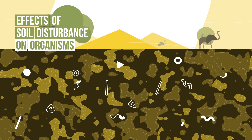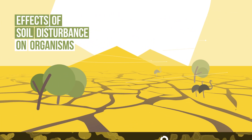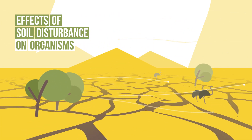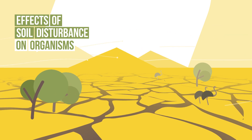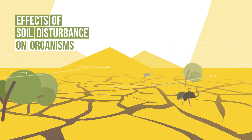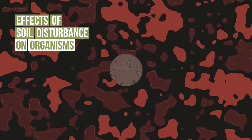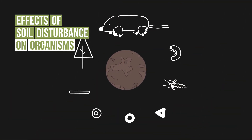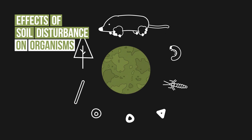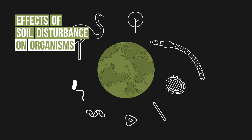Soil organisms are diverse and are found in all environments, even those with extreme physical and chemical conditions. The responses to disturbances depend on how the environment of the organisms is changed and how this affects their ability to function. The availability of organic matter overrides the functioning of most soil organisms. Therefore, disturbances that change the type or quantity of organic matter in the soil will have significant impacts on soil communities.